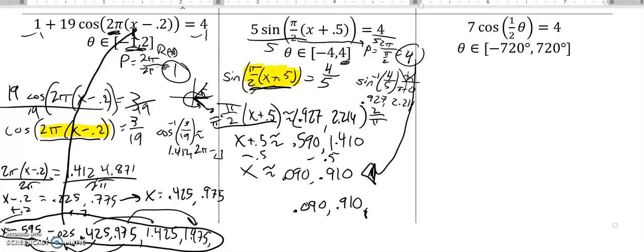But I will subtract 4 from each of these. If I subtract 4 from this one, I get negative 3.910. And if I subtract 4 from this one, I get negative 3.090. And there's my answers. I could plug them back in to check them.